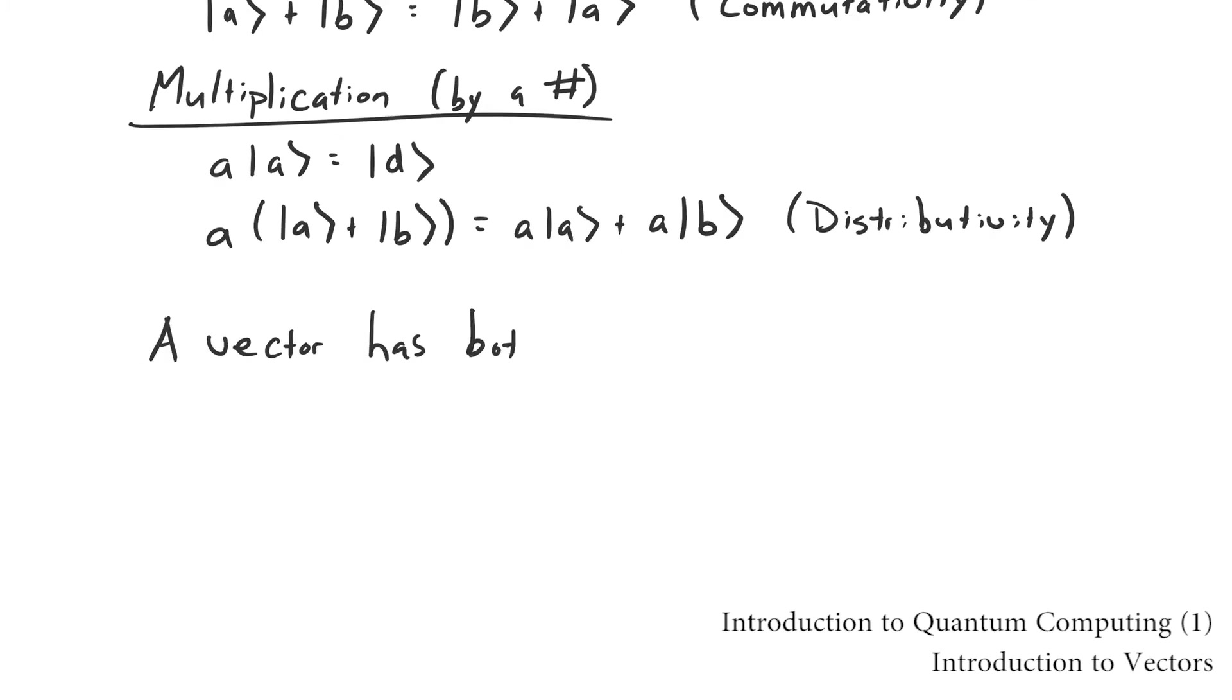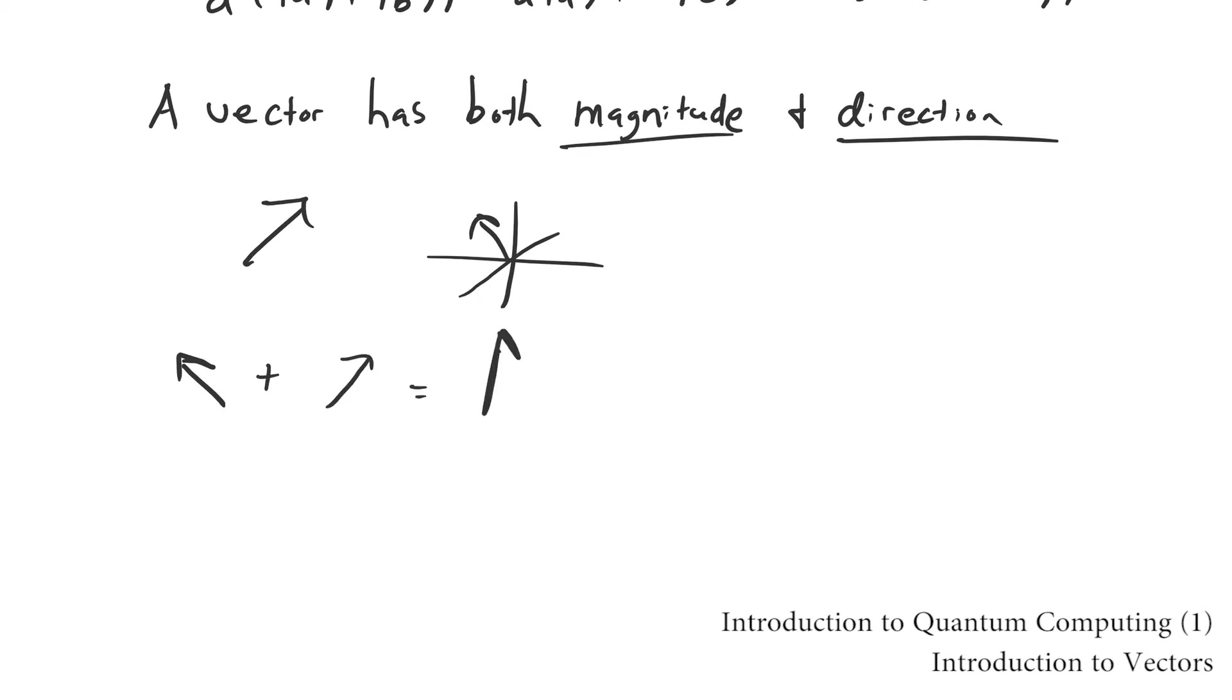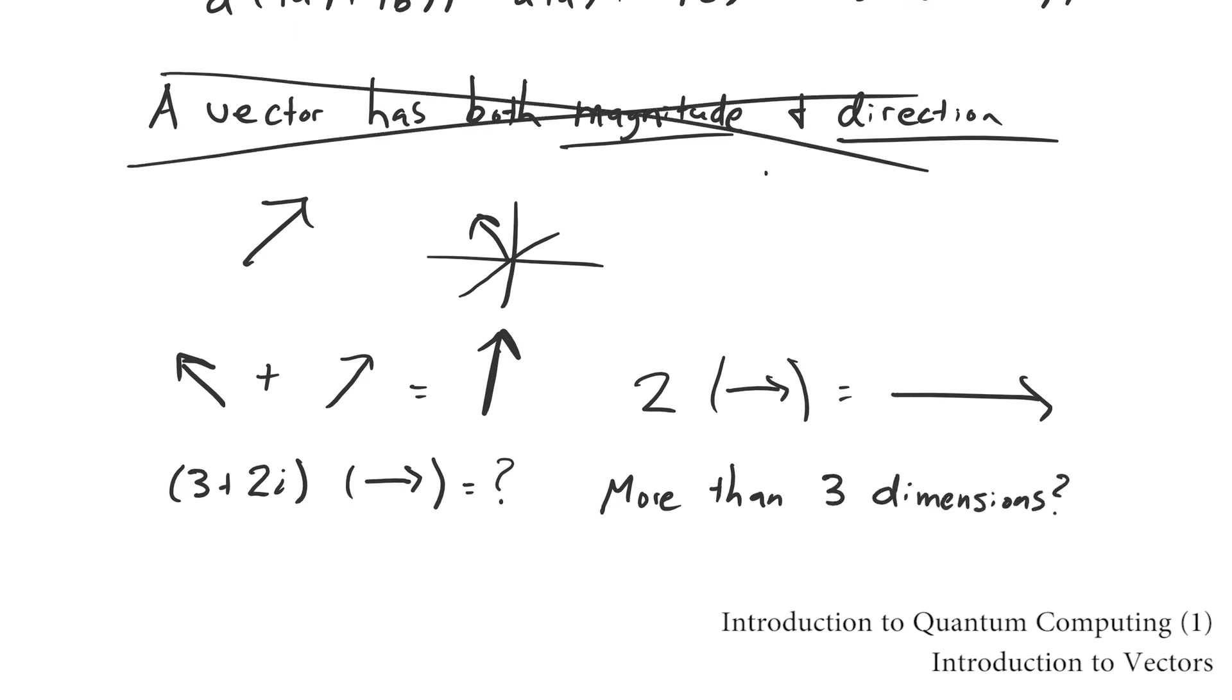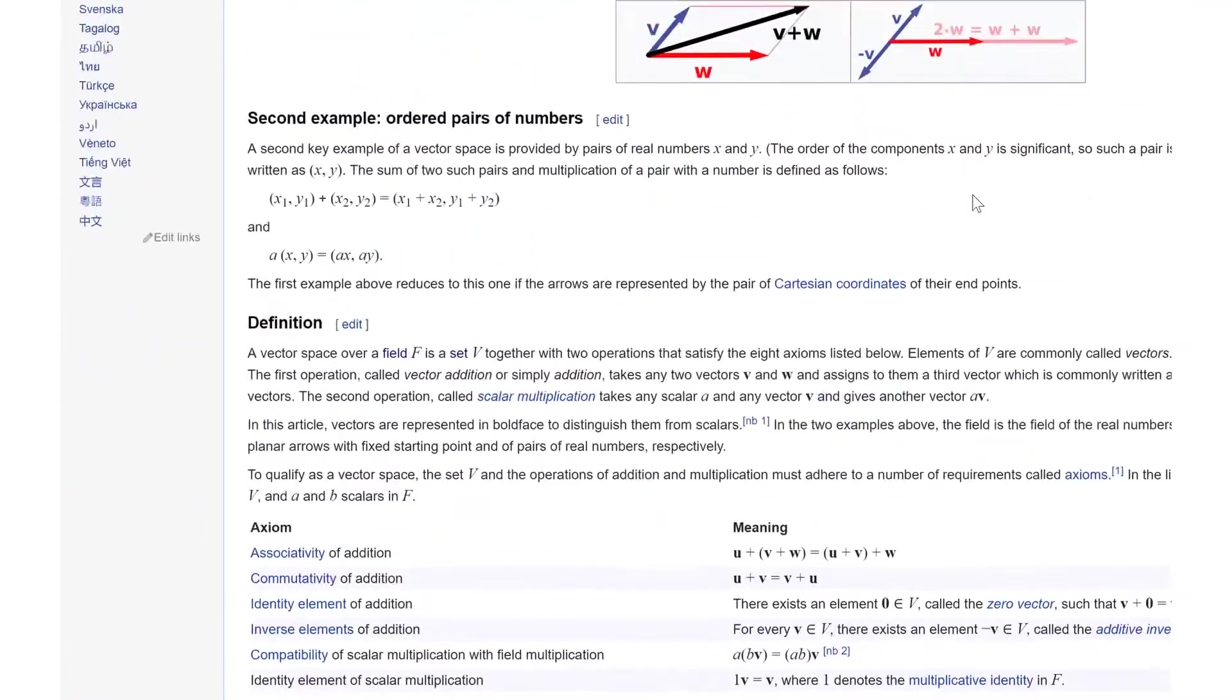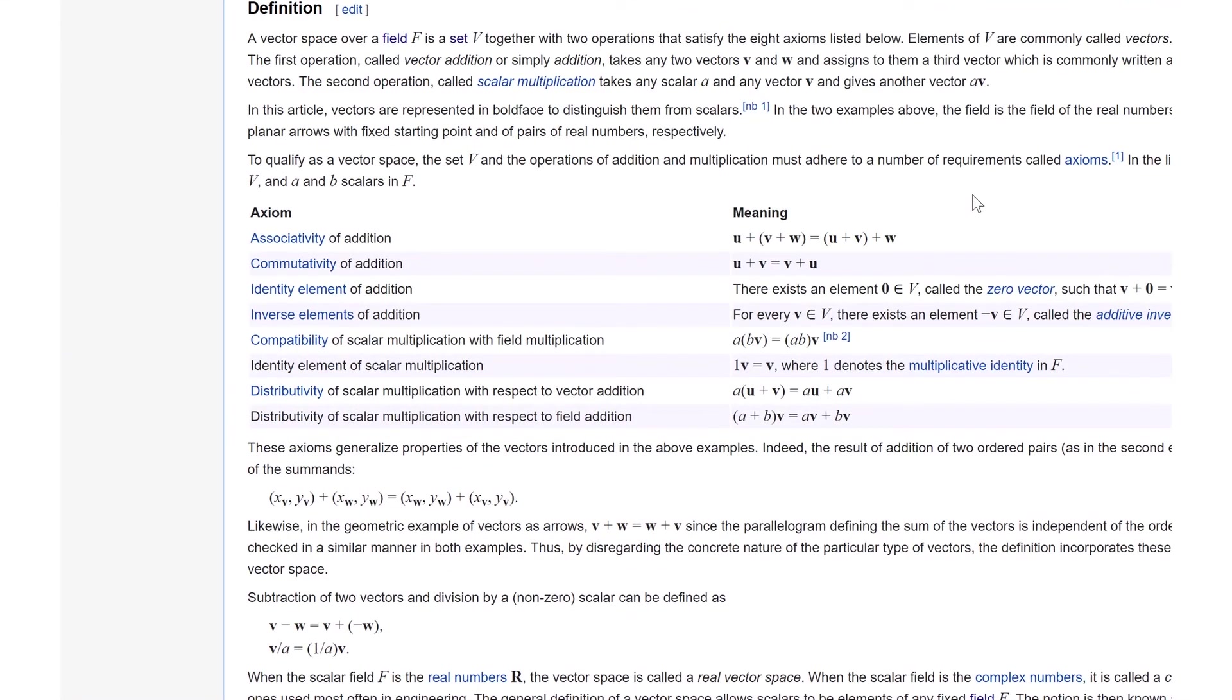If you've previously encountered vectors and thought about them as having both magnitude and direction, you should forget what you think you know. Those are Euclidean vectors, a subset of their more abstract siblings that quantum mechanics deals with, which are best defined by axioms that describe how they behave under addition and multiplication by a number.